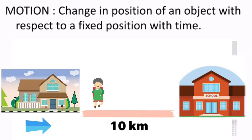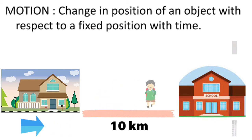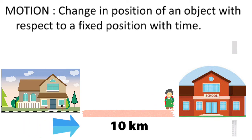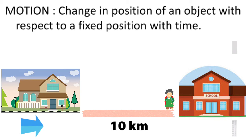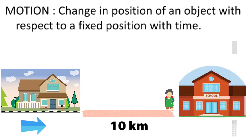This boy starts from home to school every day at 9 am and travels a distance of 10 kilometers to reach his school. He takes 10 minutes to travel this total distance, so we can say he takes 1 minute to travel 1 kilometer. For example, after 5 minutes the school boy is 5 kilometers away from home.